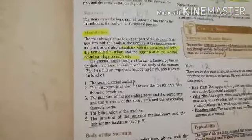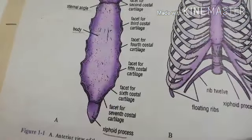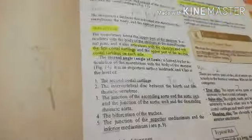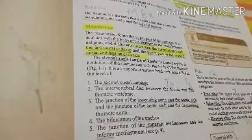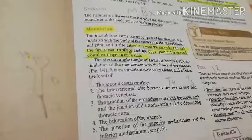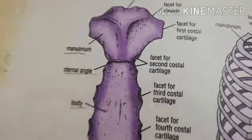Now we will have details about the manubrium. The manubrium forms the upper part of the sternum. It articulates with the body of the sternum at the manubriosternal joint. You can see here is the body, and this is the sternal angle.